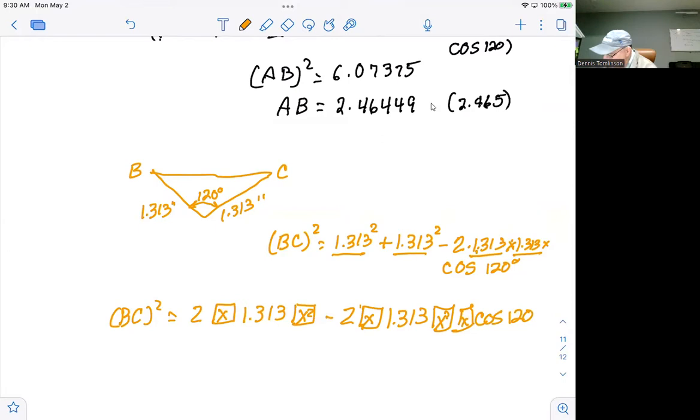And when you punch all of that in, two times 1.313 squared minus 2 times 1.313 squared times the cosine of 120, get 5.17190. And that is the length of side BC squared.